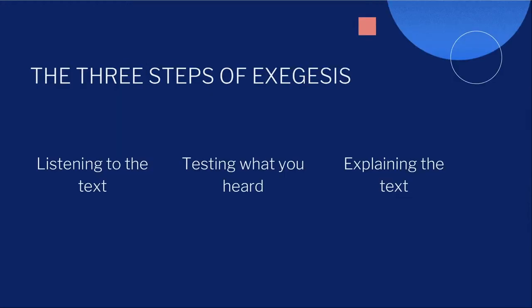The process of exegesis has three steps — perhaps a bit oversimplified, but this is the basic structure of any approach. First, we need to listen to the text and try to hear it on its own terms. Then we test what we heard with other communities or readers to see if it falls in line with a consensus of interpretation. And the last step is to explain the text — this is where we turn to a paper, a sermon, or other type of presentation.